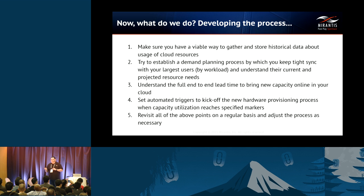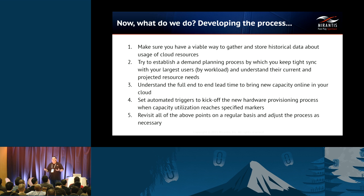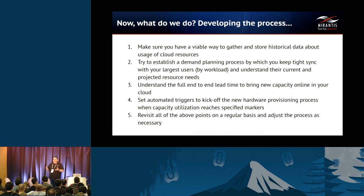Establish a demand planning process. This is actually one of the most important things we found. We could just use numbers to say every month we're adding this much capacity and using this much capacity, and try to keep those lines separated through the graph. What's a lot easier is to go to our big users and say, 'We noticed you're one of our major users — you used a thousand instances this month. Do you have any kind of planned growth for next month, three months from now, six months from now, a year from now? Are there any major initiatives happening that are going to cause your usage to spike?'